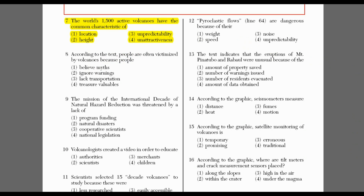For example, question 7: the world's 1,500 active volcanoes have the common characteristic of... Notice I'm skipping the multiple choice answers. For me, this is too much to keep in my head because the answer pool contains variables. If I'm considering all four answer possibilities, it's like keeping four ideas in my head instead of just one.